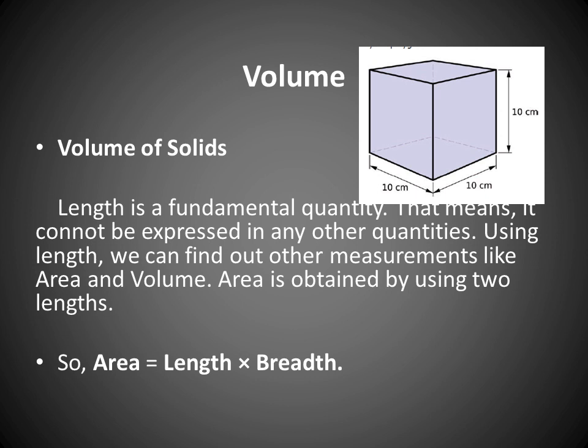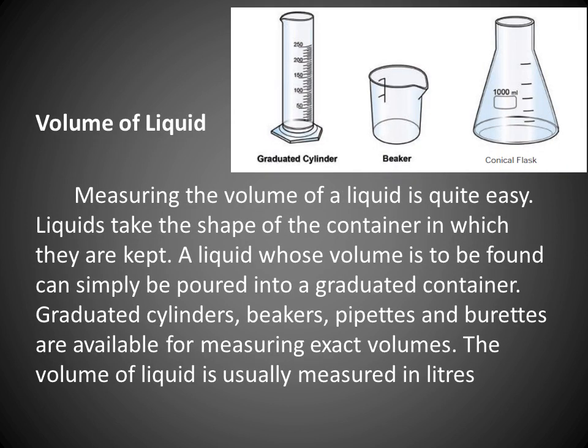Length is a fundamental quantity, meaning it cannot be expressed in terms of other quantities. Using length, we can find other measurements like area and volume. Area is obtained by using two lengths: area equals length into breadth. Liquids take the shape of the container in which they are kept. A liquid whose volume is to be found can simply be poured into a graduated container. Graduated cylinders, beakers, pipettes, and burettes are available for measuring exact volumes. Volume of liquid is usually measured in liters.